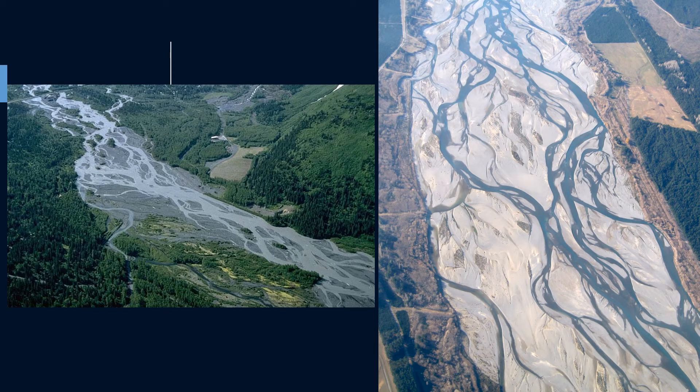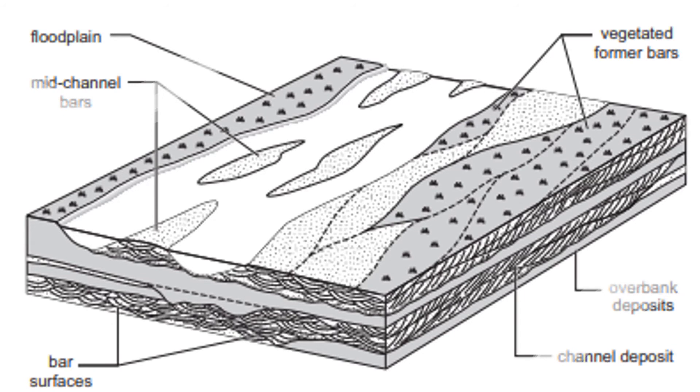Braided, also called bedload rivers, are rivers containing channel bars, giving the river a braided appearance. This type of river deposits bedload sediments, which are sediments transported by rolling and saltation on the channel floor. This is a highly unstable form of river, because it often forms in floodplains without much vegetation to hold the river in place. Sediment in braided rivers tends to produce small islands of sediment called bars, formed when gravelly material accumulates in the middle area of the river.